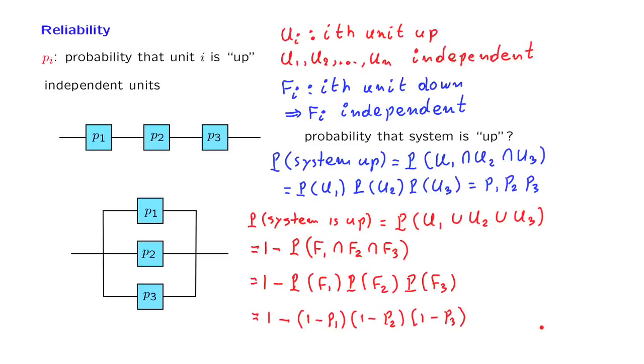So, we have derived a formula that tells us the reliability, the probability that a system of this kind is up, in terms of the probabilities of each individual components. You will have an opportunity to deal with more examples of this kind, a little more complicated in the problem that follows, and even more complicated in one of the problem solving videos that we will have available for you.